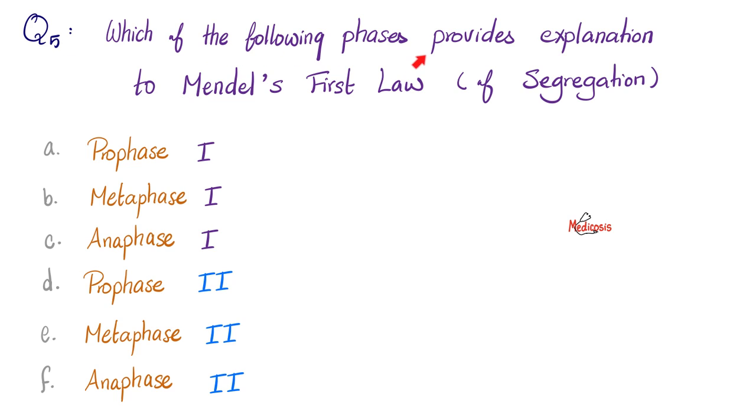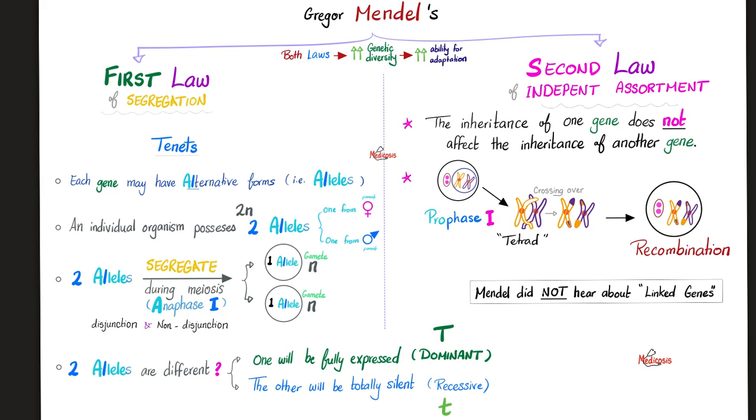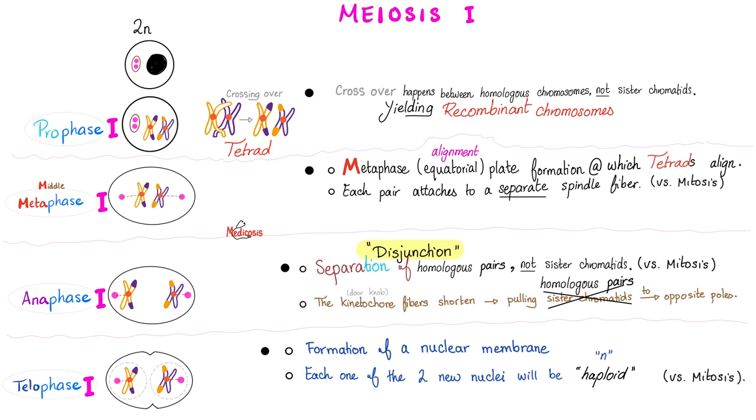Question number five. Which of the following phases provide an explanation to Mendel's first law? Please go. The answer is anaphase one. Here is anaphase one. Do you know what's happening? The two alleles are separating, i.e. segregating into two different gamete cells. Contrast that with Mendel's second law of independent assortment, which is explained by prophase one, where you have the tetrad and the crossing over. But as for Mendel's first law, it's anaphase one. Remember the disjunction.